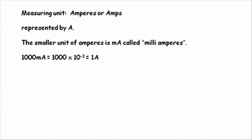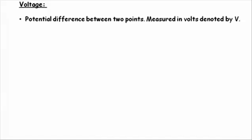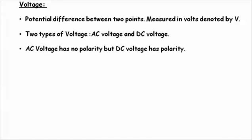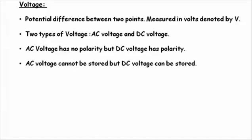Concluding the topic, let's have a look at what we have learnt so far. We have learnt that voltage is defined as the potential difference between two points and it is measured in volts. Voltage is classified into AC voltage and DC voltage. Then we looked into their major differences: that AC voltage has no polarity but the DC voltage has polarity, and that AC voltage cannot be stored whereas DC voltage can be stored.